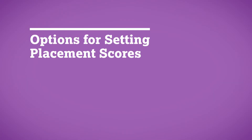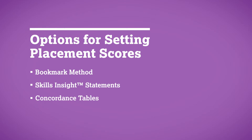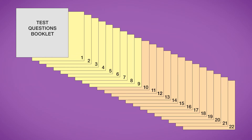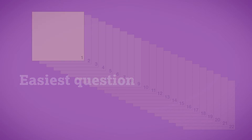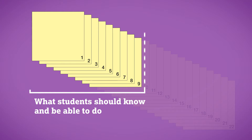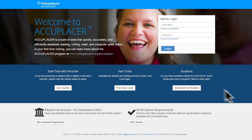The College Board recommends three options for setting placement scores, including the use of concordance tables. The first is the bookmark method, a three-round process in which panelists work through a booklet of test questions arranged in order from easiest to hardest. The panelists place a bookmark after the number of questions they determine students should be able to answer at a minimum. Details on this proven and effective method can be found on the Accuplacer platform by clicking on the Resources tab.